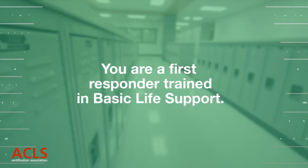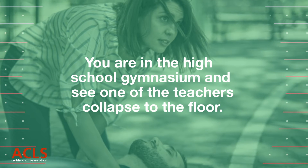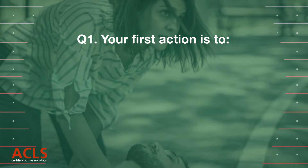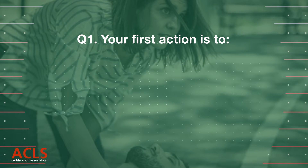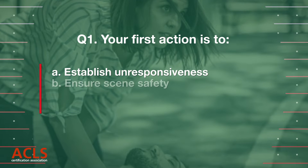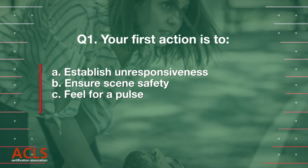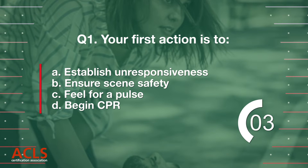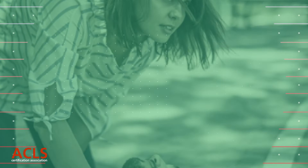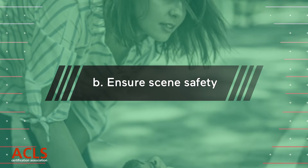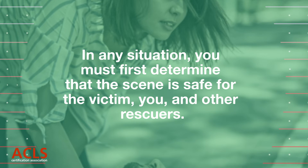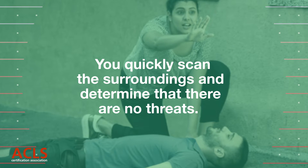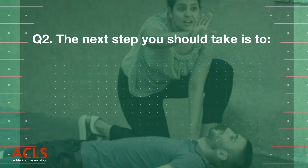You are a first responder trained in basic life support. You are in the high school gymnasium and see one of the teachers collapse to the floor. You approach the man on the floor. Question 1: your first action is to — A) establish unresponsiveness, B) ensure scene safety, C) feel for a pulse, D) begin CPR. Correct answer: B, ensure scene safety. In any situation you must first determine that the scene is safe for the victim, you, and other rescuers. You quickly scan the surroundings and determine that there are no threats.